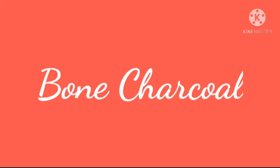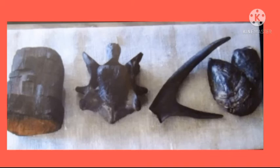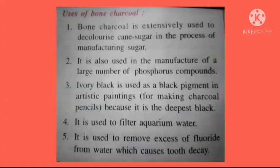Bone charcoal: destructive distillation of bones produces bone charcoal along with bone oil and the organic compound pyridine. Bone charcoal mainly contains calcium phosphates. The carbon content is separated by treating it with hydrochloric acid, which dissolves the calcium phosphates, and the carbon is filtered out — in this form it is called bone black. Uses: bone charcoal is extensively used to decolorize cane sugar in the manufacturing process. It is used in the manufacture of phosphorus compounds, as a black pigment in artistic painting (ivory black), to filter aquarium water, and to remove excess fluoride from water which causes tooth decay.